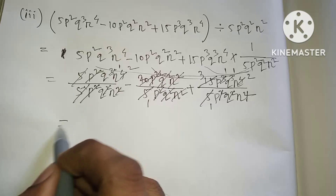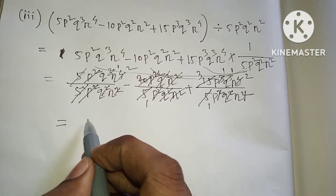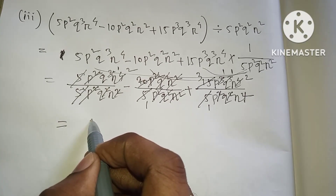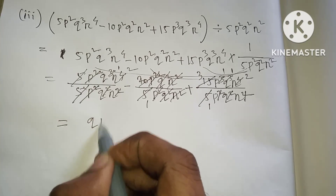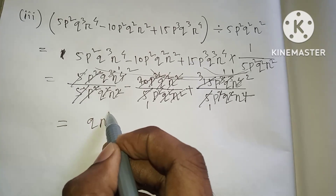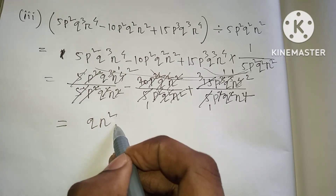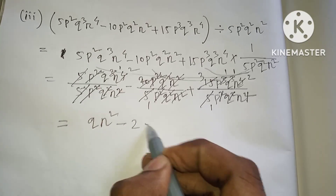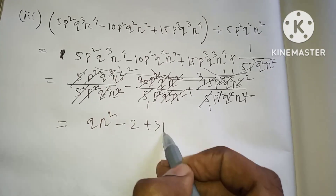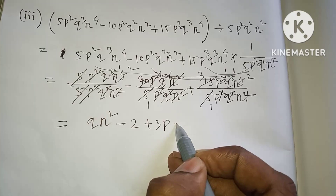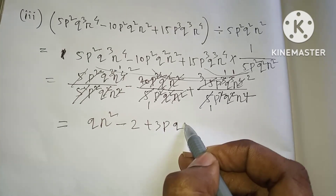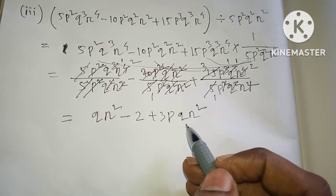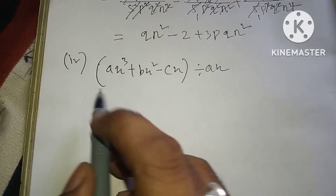After cancellation: Q, R squared, minus 2, plus 3, P, Q, R squared. Number 4: A x to the power 3 plus B x to the power 2 minus C x, into 1 by A x.